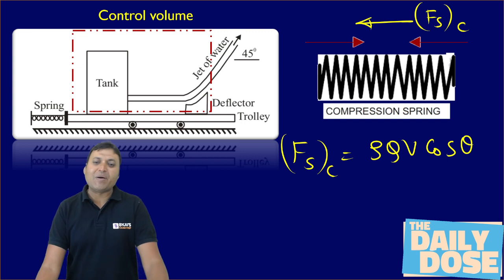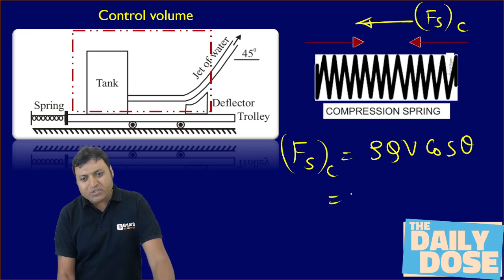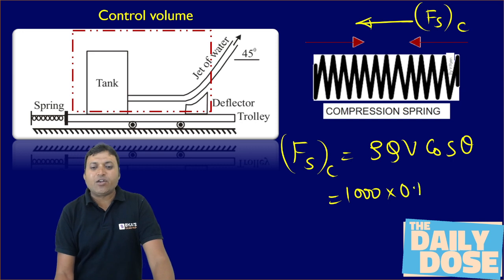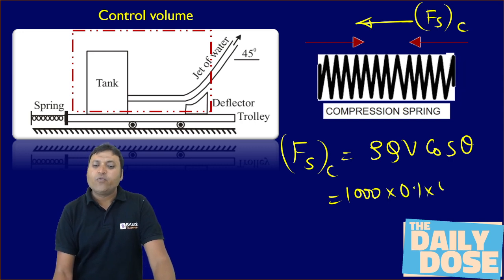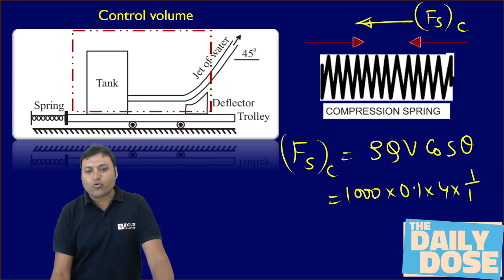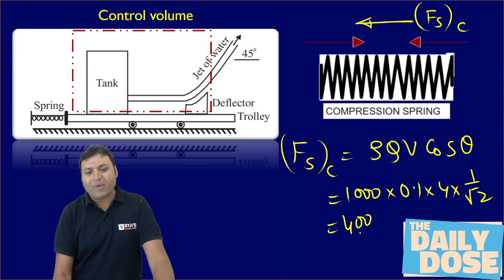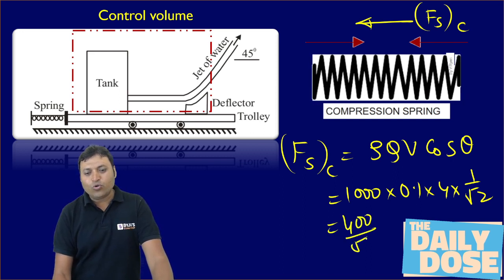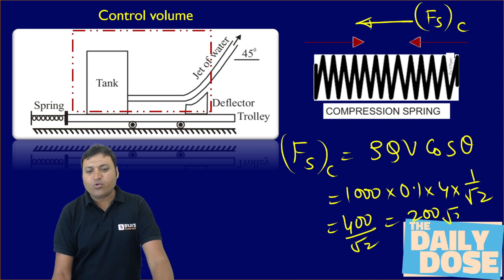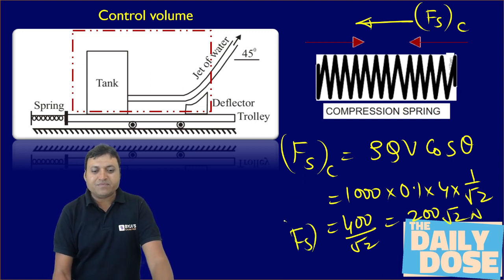Putting in the values: rho = 1000, Q = 0.1, V = 4, and cos(45°) = 1/√2. So the spring force = 1000 × 0.1 × 4 × (1/√2) = 400/√2 = 200√2 Newton, and this force is compressive in nature.